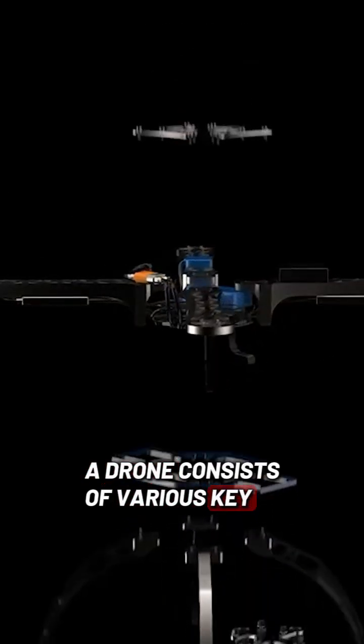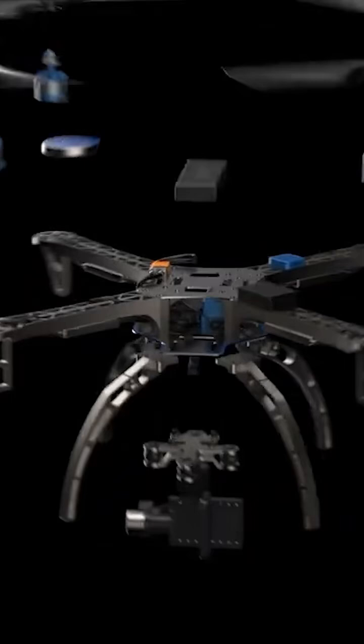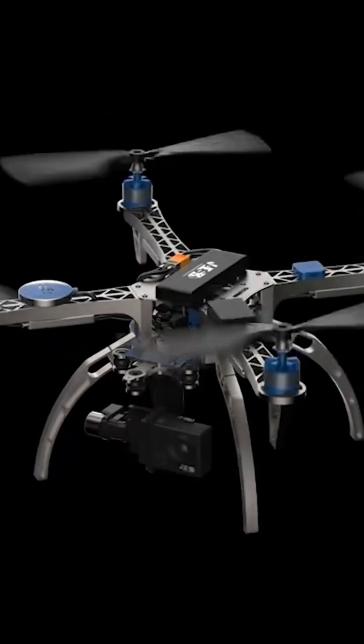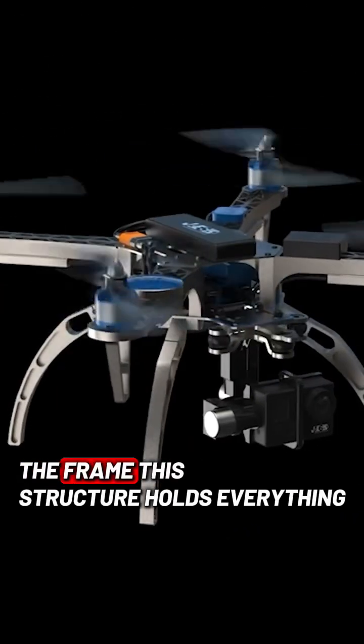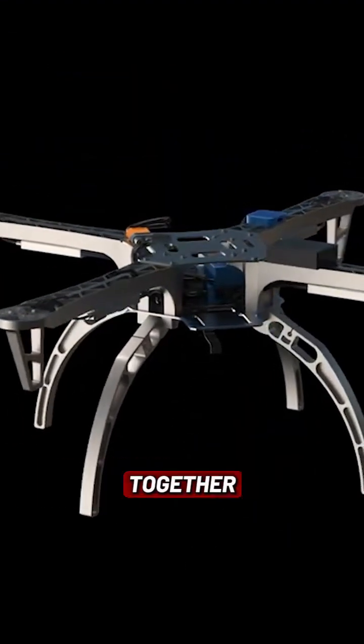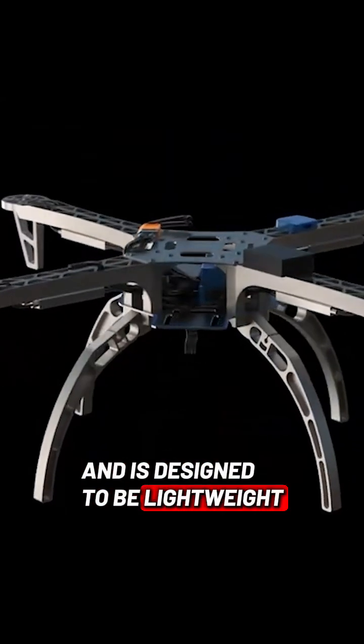A drone consists of various key components that work together. Let's find out what they are. The frame. This structure holds everything together and is designed to be lightweight and durable.